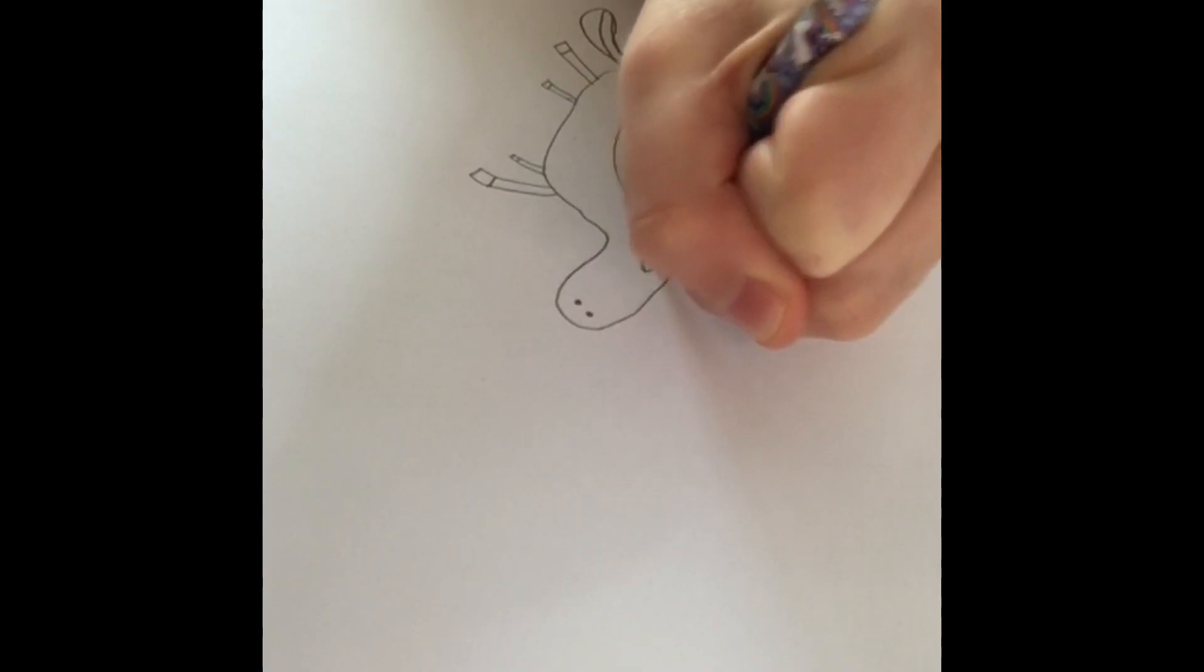Now let's draw an eye. You can draw lines going off the eye to look like eyelashes if you would like. And if you just draw lines going from its head down to its back then it will make a mane.